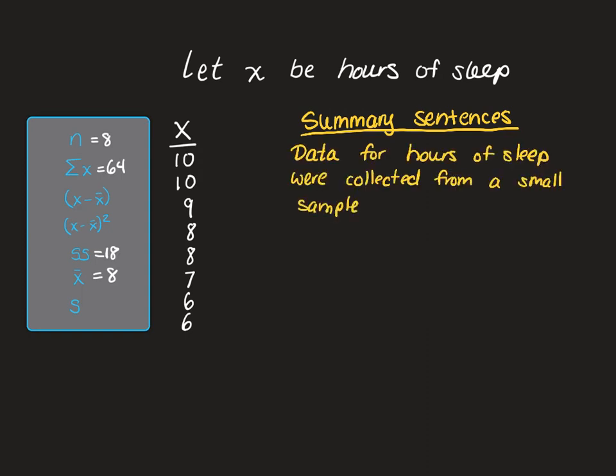So for examples, we could say, Data were collected from a small sample. Anytime we give a summary statement, we must provide the statistic. We typically do this by putting it in parentheses in symbol and numeric form. So I could end my sentence with parentheses N equals 8 to show that when I say small, referring to my sample, I specifically mean 8 people.